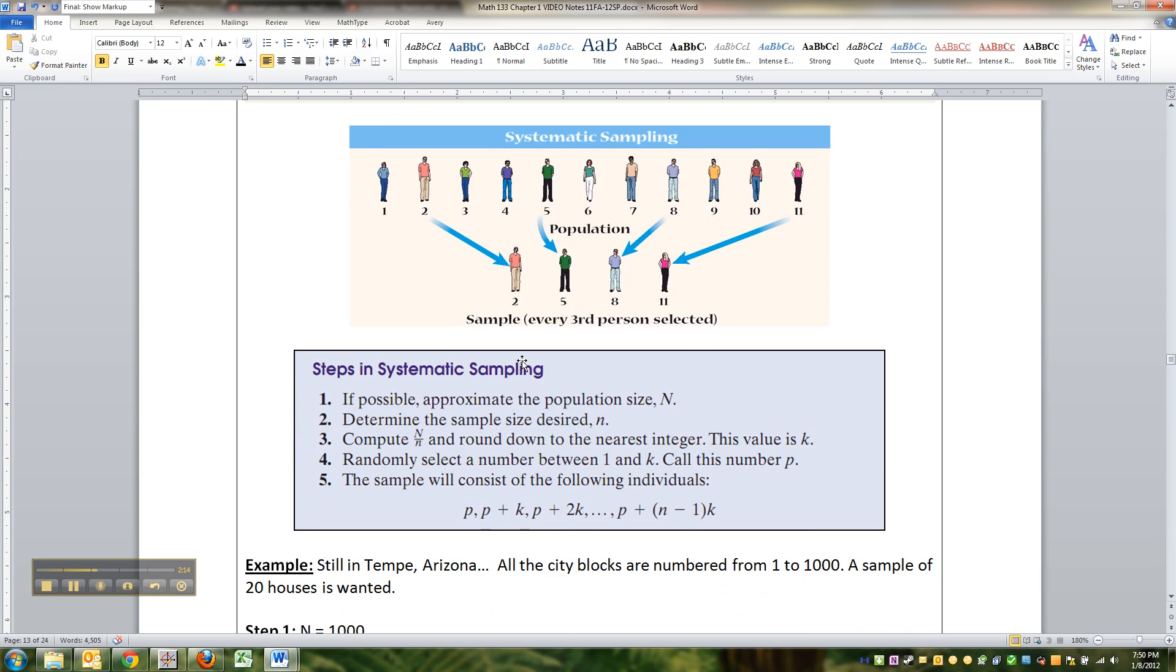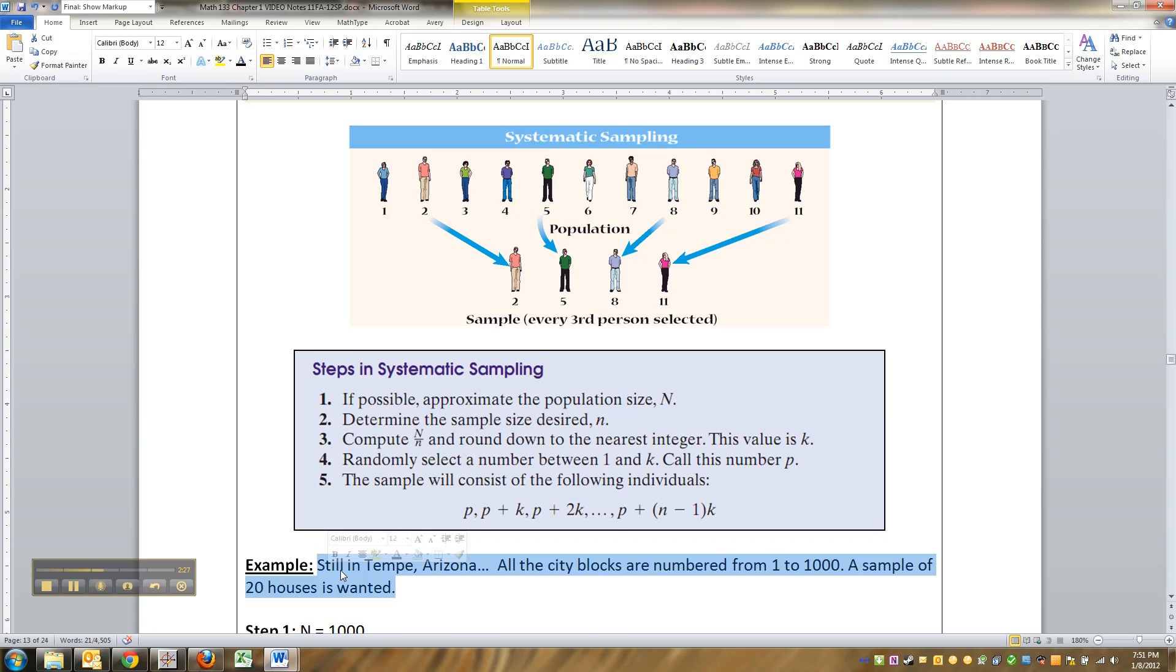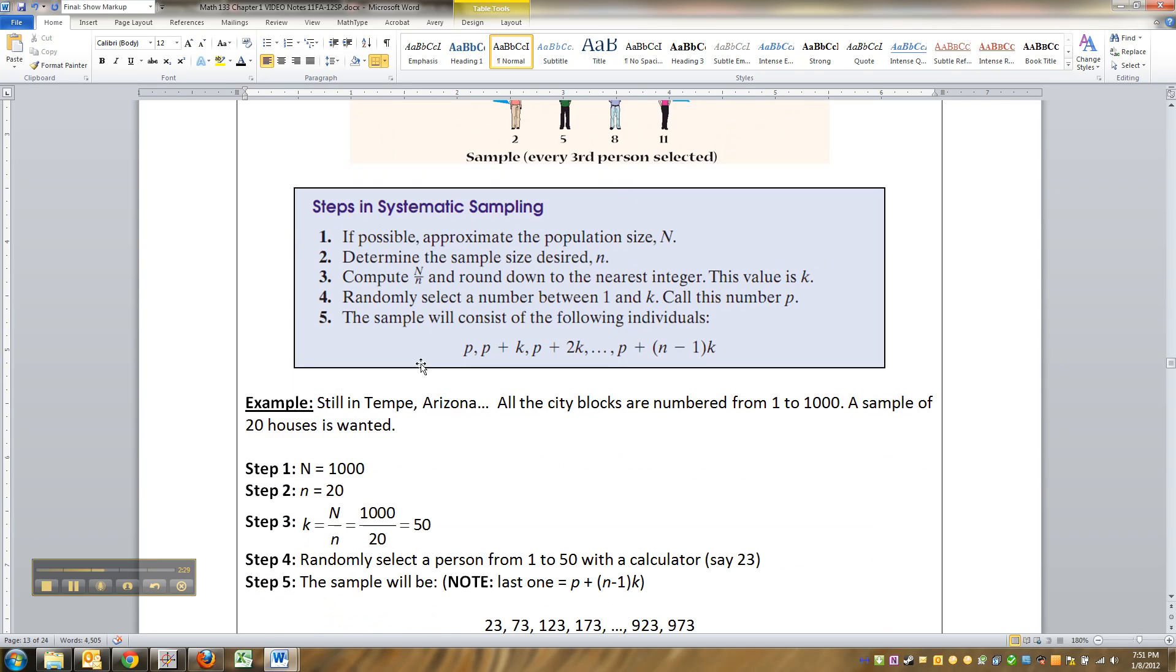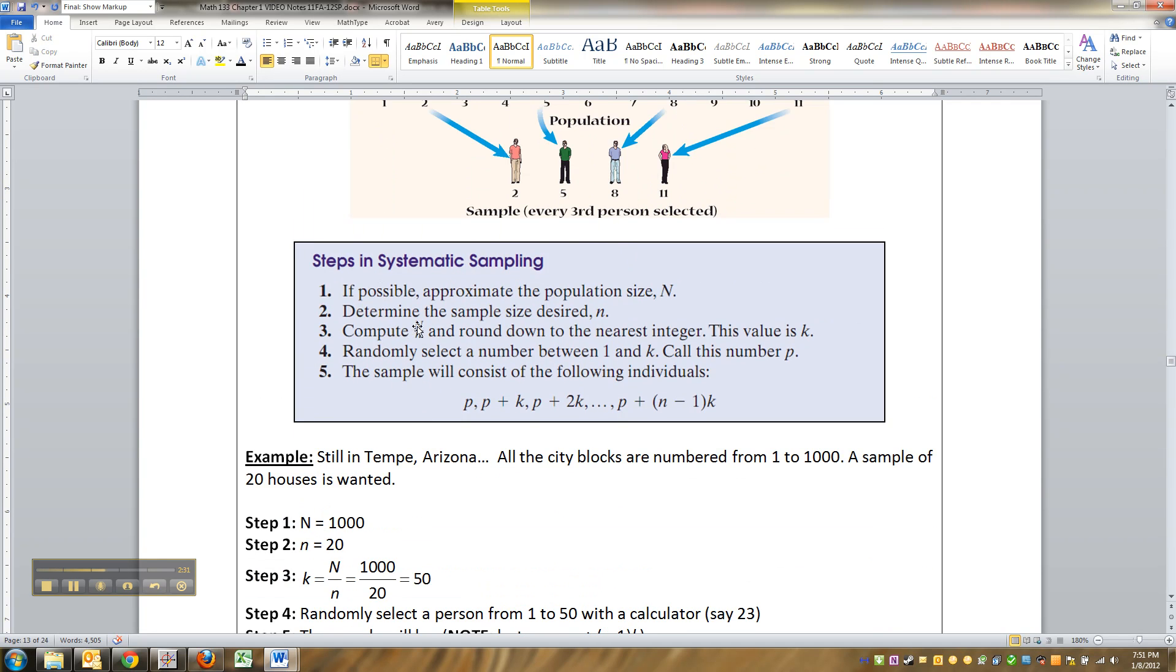So it's sort of like when you're the 500th customer to cross the bridge, you get a prize, that kind of thing. Or you're the 30th person to come to airport security, you get frisked, who knows how it works. All right. So that's how, in theory, how systematic sample works.